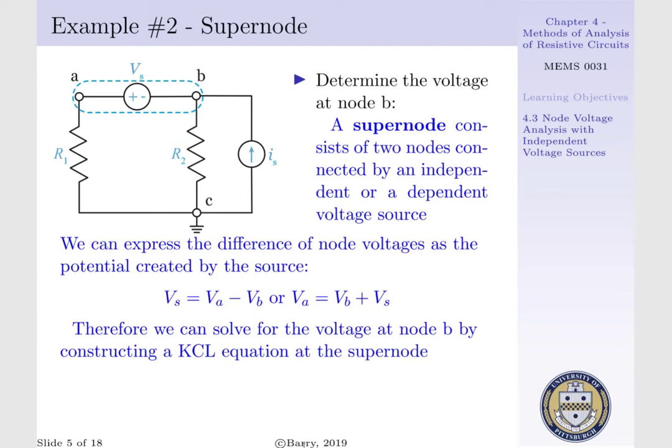If you did such, you would realize there would be a source current running through Vs that we designate by Is, which would link our KCL equations at A and B.